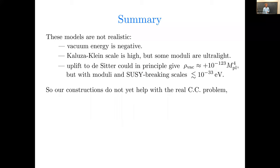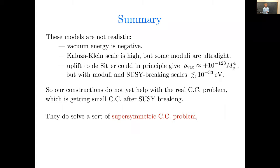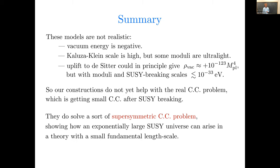So as described here, one would have to do something more intricate to make cosmologically realistic models. Even so, although these models don't help with the real CC problem, which is of course getting small cosmological constant after supersymmetry breaking, you could say that they do sort of solve a supersymmetric cosmological constant problem. Namely, they show how an exponentially large supersymmetric universe can arise in a theory in which the fundamental length scale is small. They also change at least our own picture of how accessible solutions with these kinds of scales actually are in the string landscape.